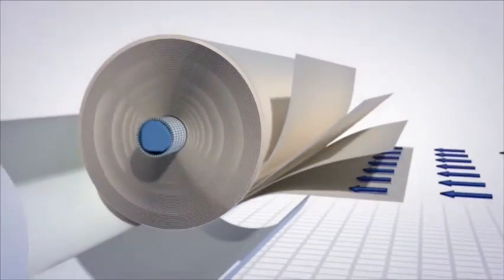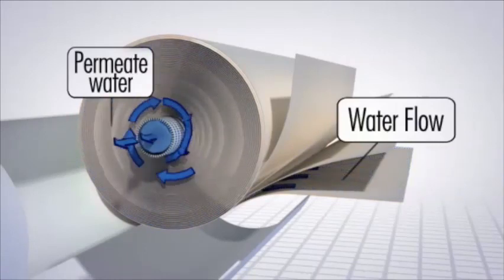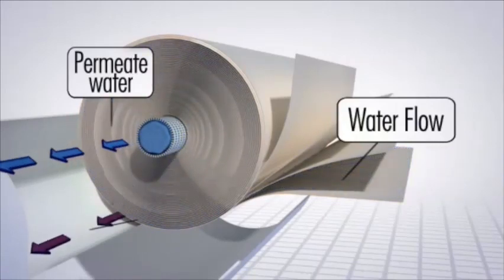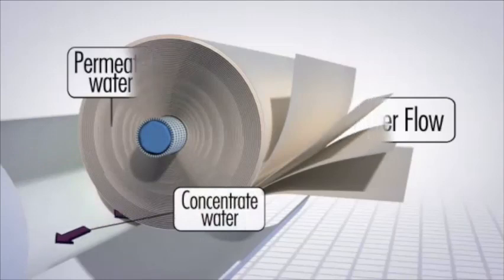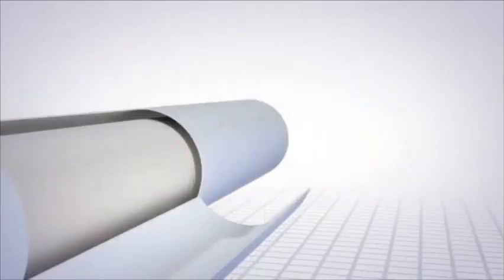Two streams of water are produced. Pure, clean water or permeate flows across the membrane sheets and passes through the membrane layers to the inside core tube. Water that does not permeate becomes more highly concentrated with salts and other substances. This water is called concentrate.